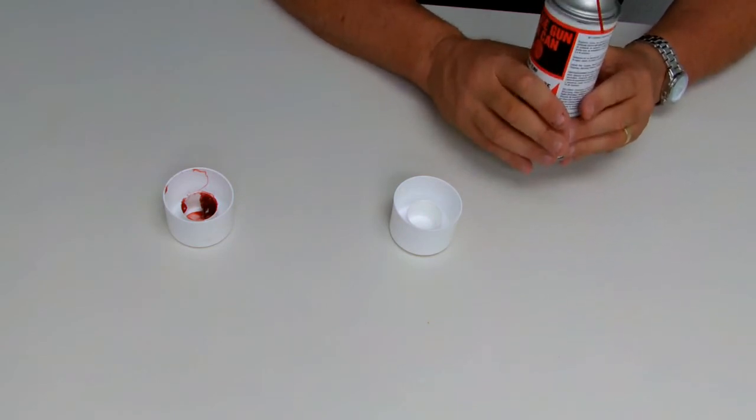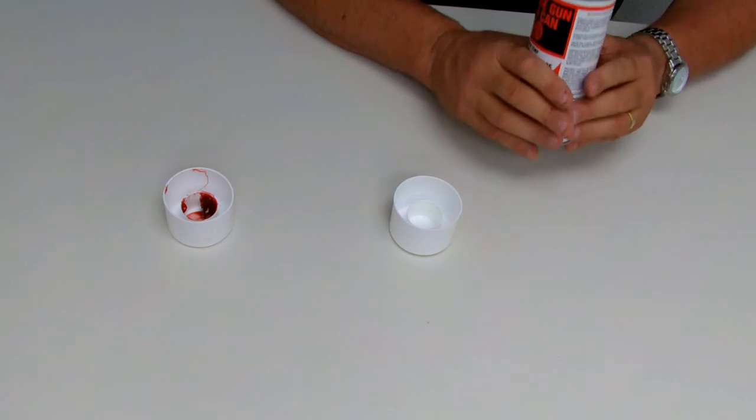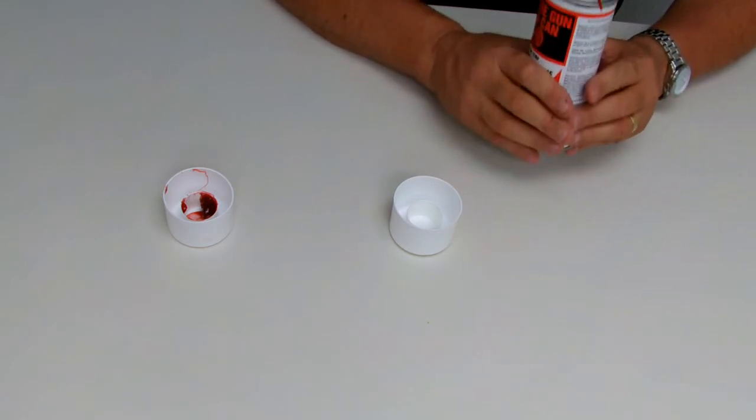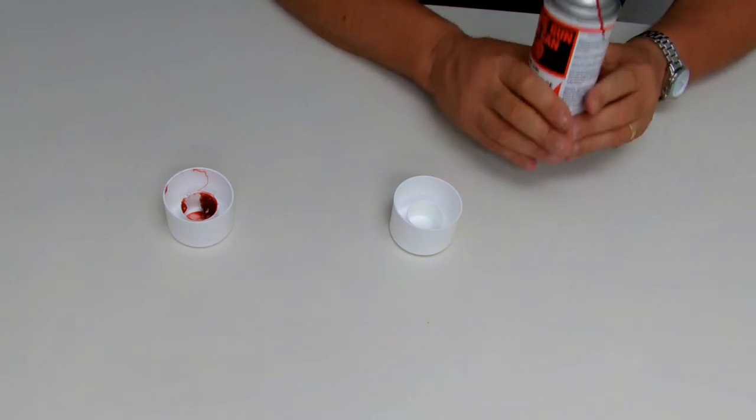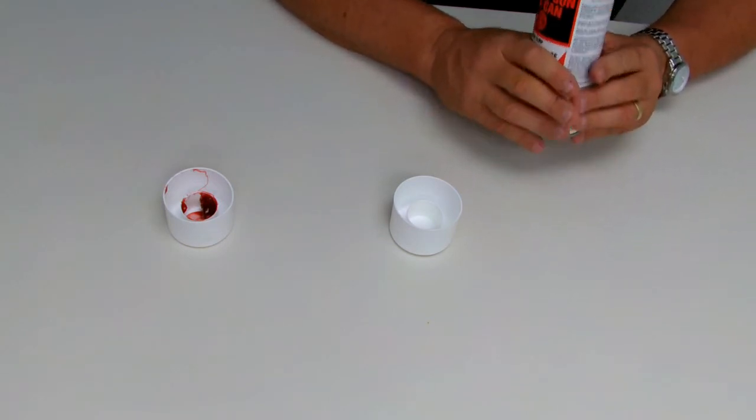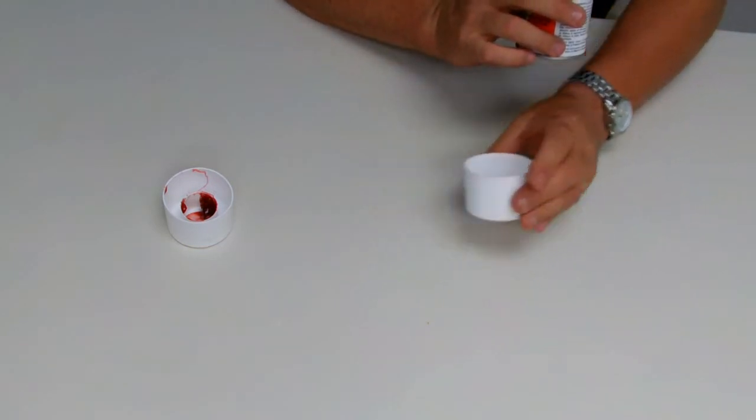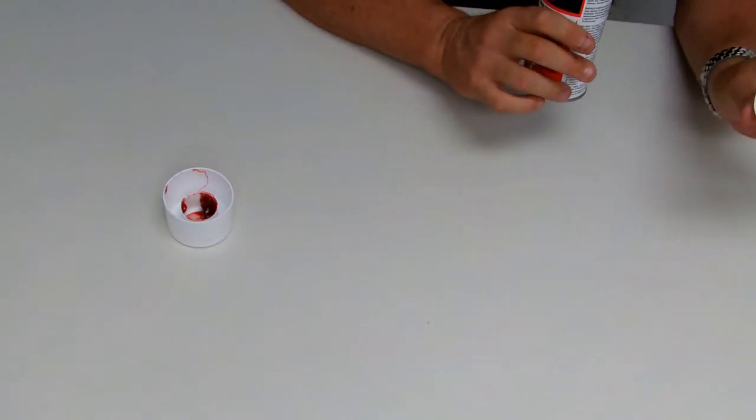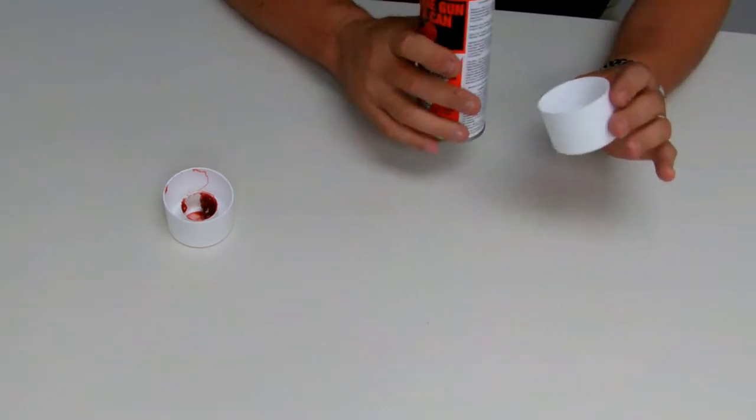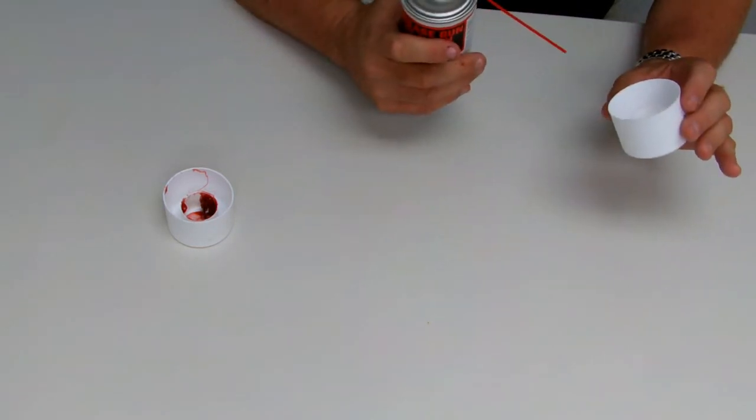When you blend it into a synthetic form, you're going to get the same consistency time after time, and it will last you 8 to 12 times longer than just your petroleum-based product. Now what I'm going to do is use a snorkel tube so I don't spray this all over the place, and I'm going to spray it, and I suggest everybody spray it in the cap of the can.